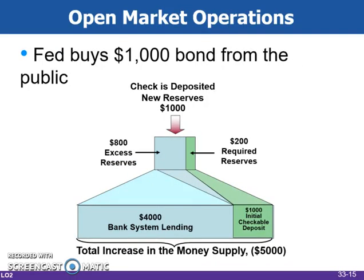When the Fed buys government bonds from the public, the effect is much the same. The assets of the Fed increase, and as the public deposits the funds into commercial banks, its reserves and lending ability will increase. Note, however, that the increase in the money supply will not be as significant due to the fact that individuals' checkable deposits will be subject to the required reserve ratio.